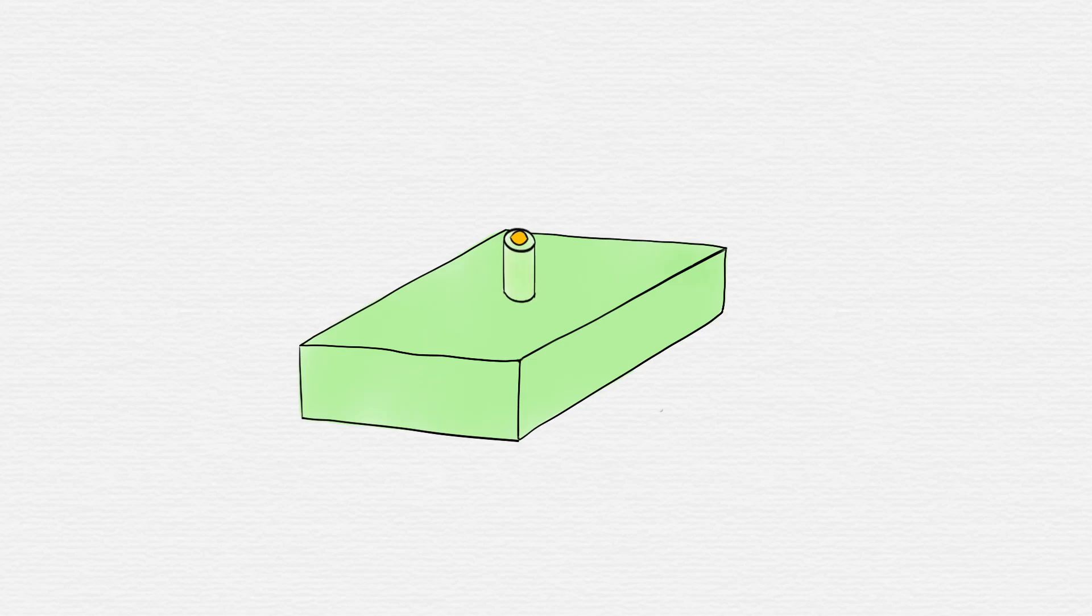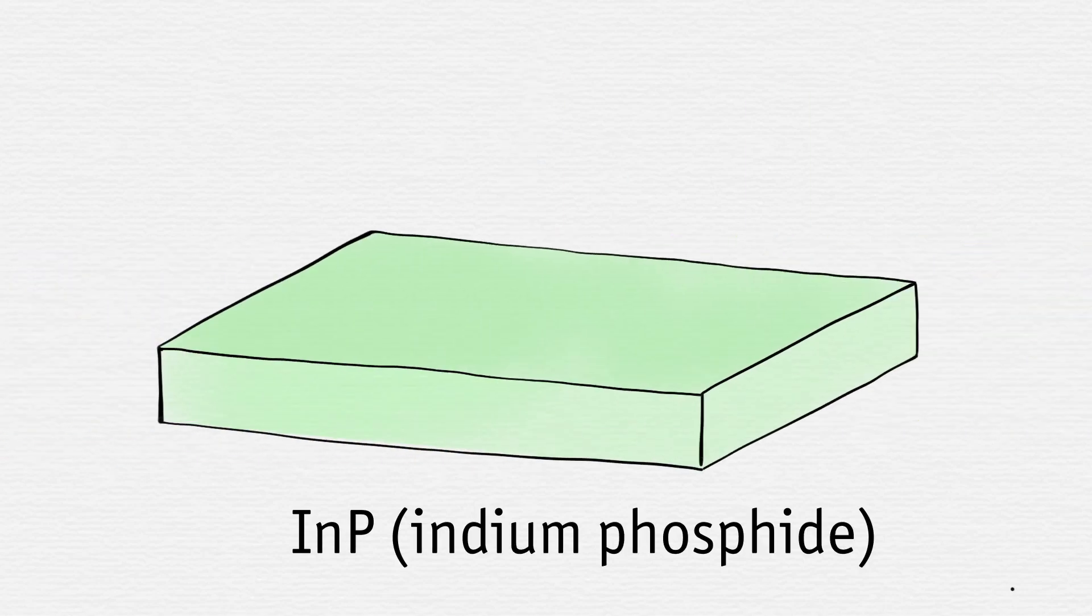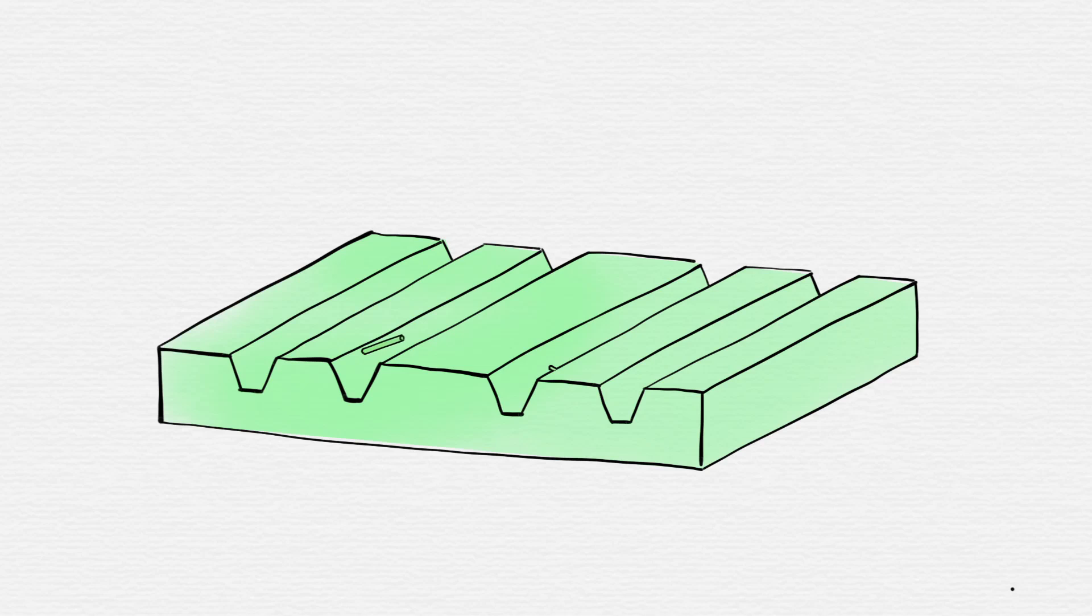Nanowires can be grown under a tiny gold drop on an indium phosphide crystal. We used a crystal with carefully crafted trenches so that the nanowires will cross each other. On the indium phosphide stalks, we grew thicker indium antimonide nanowires.